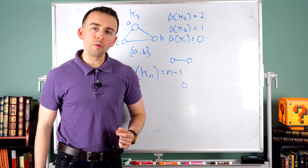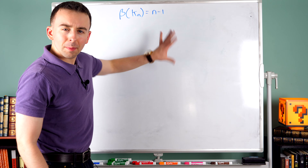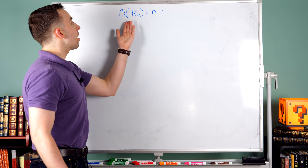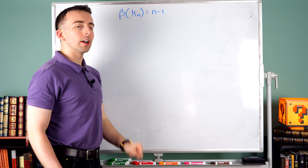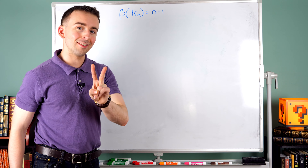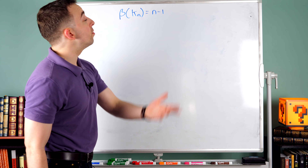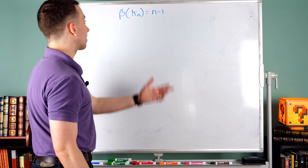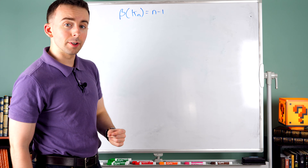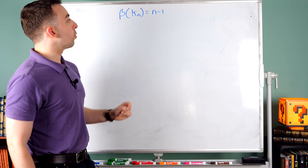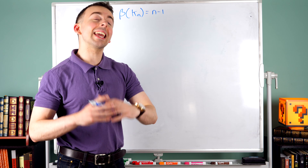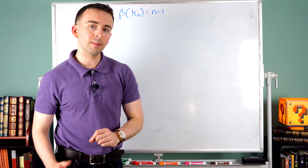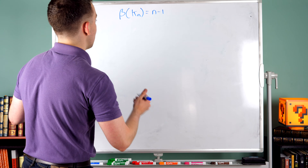Let's see if we can prove it. I've written our conjecture up here at the top and cleaned the board so we've got some more room to work with. In order to prove that the covering number of kn is n minus one, we've got to do two things — and you don't want to forget these two things. We've got to prove that n minus one vertices is sufficient to cover the graph, so we can get a vertex cover with n minus one vertices, but we also need to prove that n minus one vertices is necessary — that we can't cover kn with fewer than n minus one vertices. Let's first address the sufficiency question.